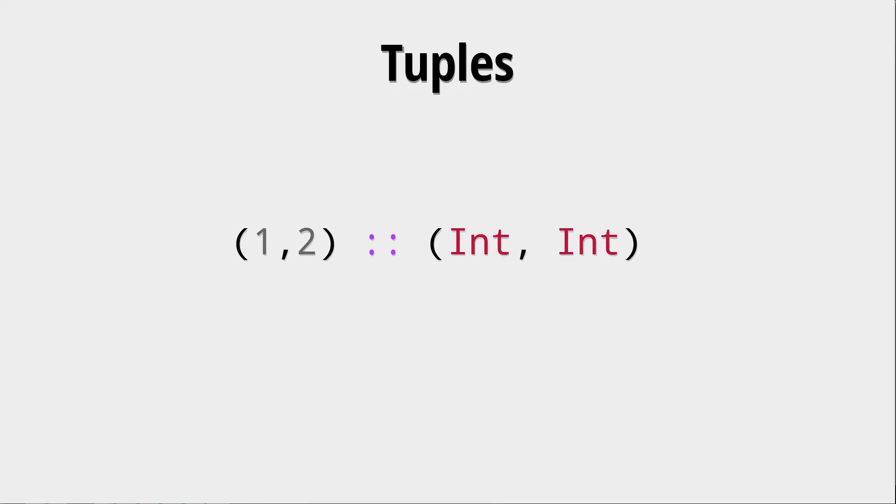Let's talk about tuples. Tuples are a way of having multiple elements in a pair. It's important that those tuples can have only two elements, but they can have more. They can have any finite amount of elements you like. You could have a three tuple, a four tuple, a five tuple, whatever. In this case, we have an int int tuple.